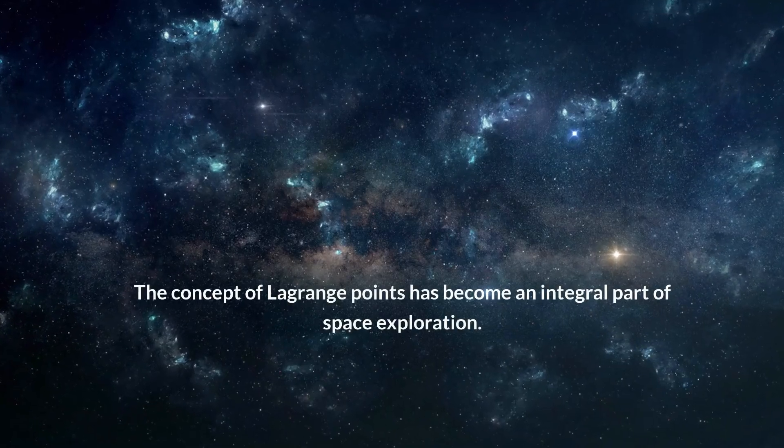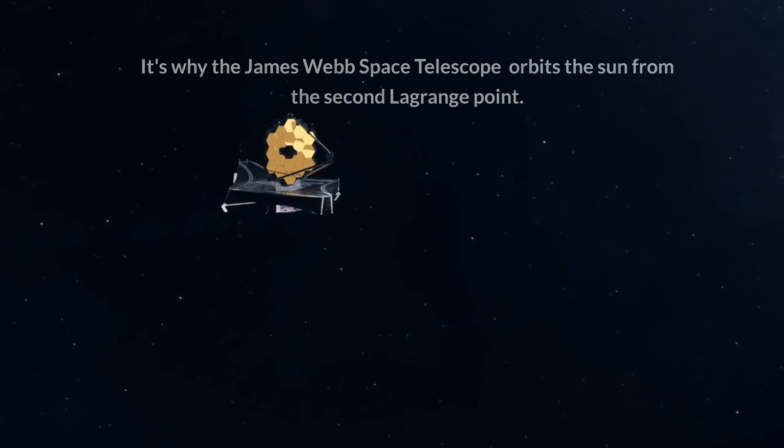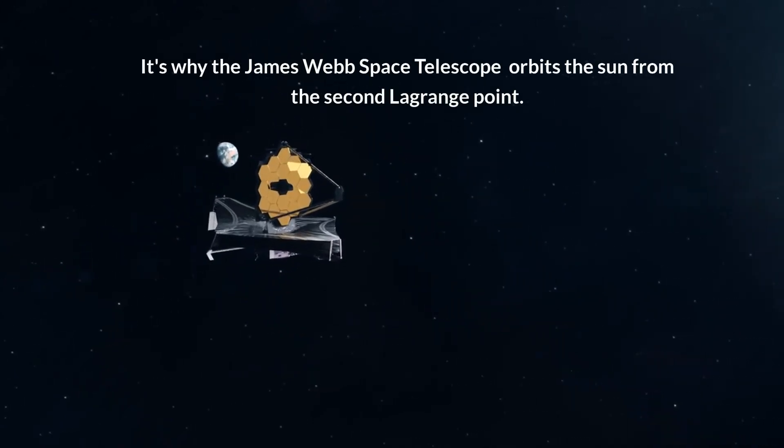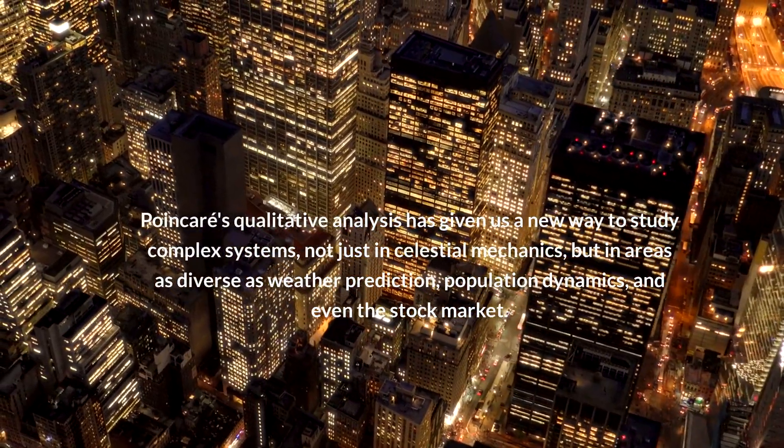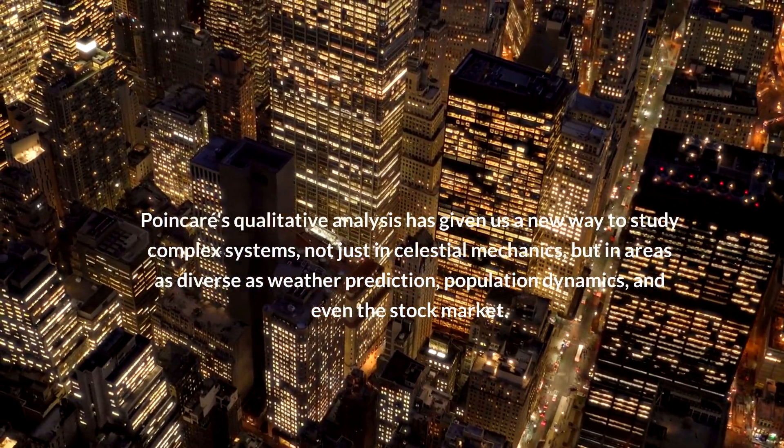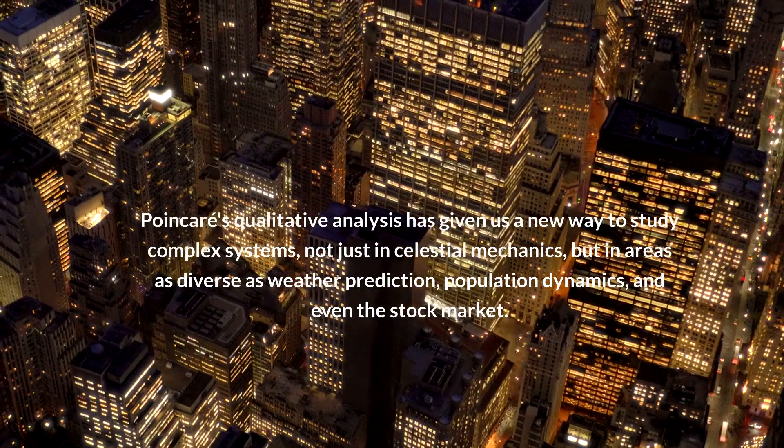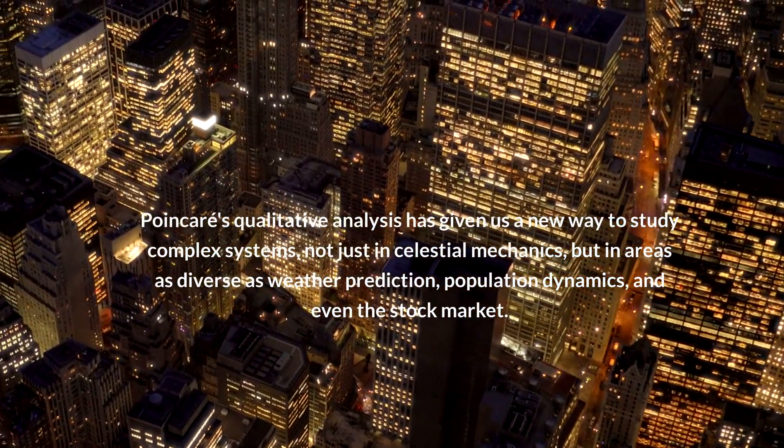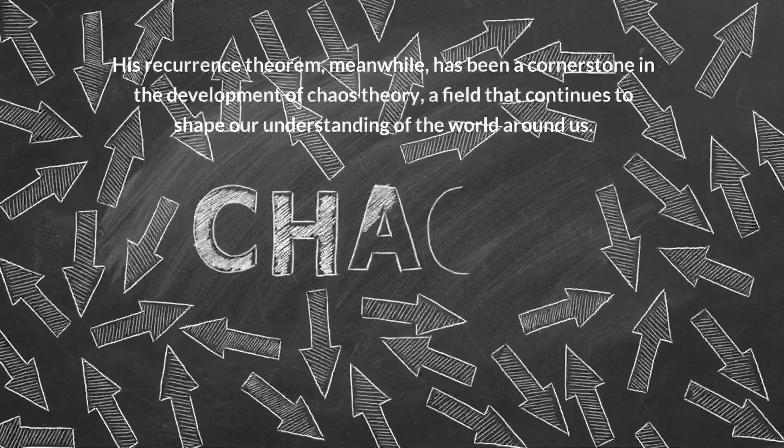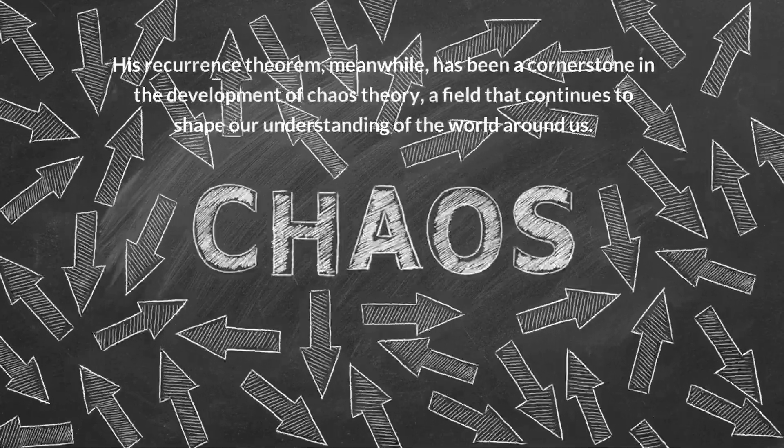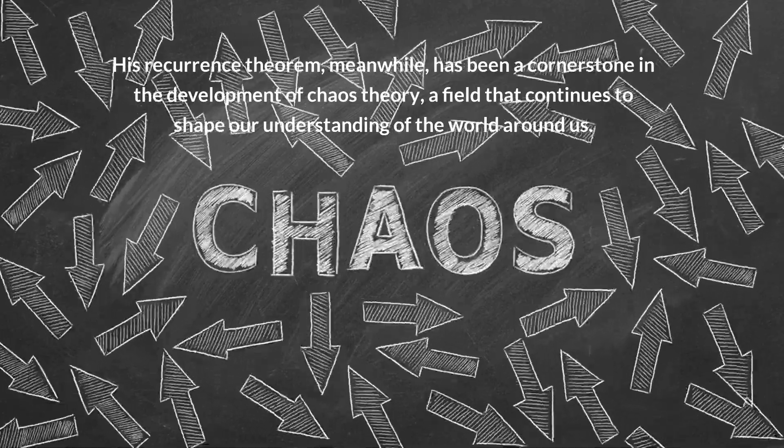The concept of Lagrange points has become an integral part of space exploration. It's why the James Webb Space Telescope orbits the sun from the second Lagrange point. Poincaré's qualitative analysis has given us a new way to study complex systems, not just in celestial mechanics, but in areas as diverse as weather prediction, population dynamics, and even the stock market. His recurrence theorem, meanwhile, has been a cornerstone in the development of chaos theory, a field that continues to shape our understanding of the world around us.